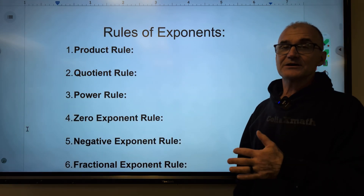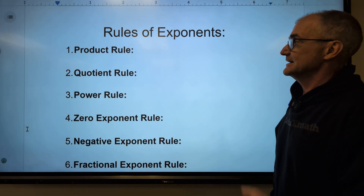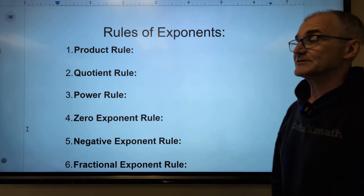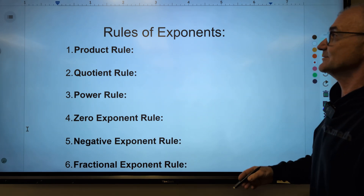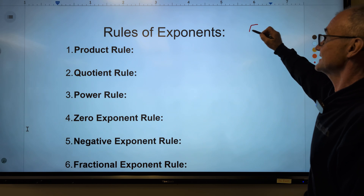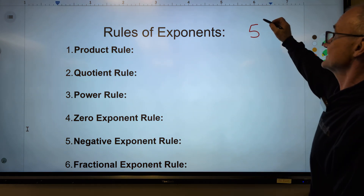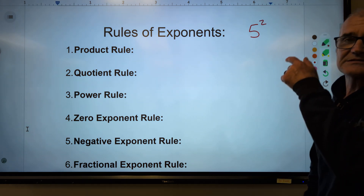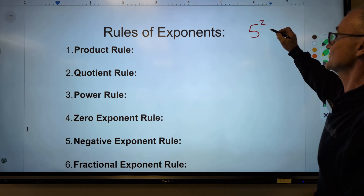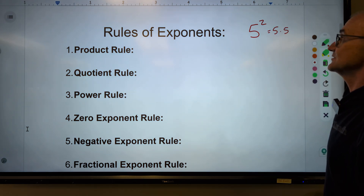Let's go ahead and start with the rules of exponents. Before we roll through these six rules, let me talk about what an exponent is. If I have something like this, this is called my base, and this is my exponent. It means it times itself. So five squared is the same thing as five times five, or 25.